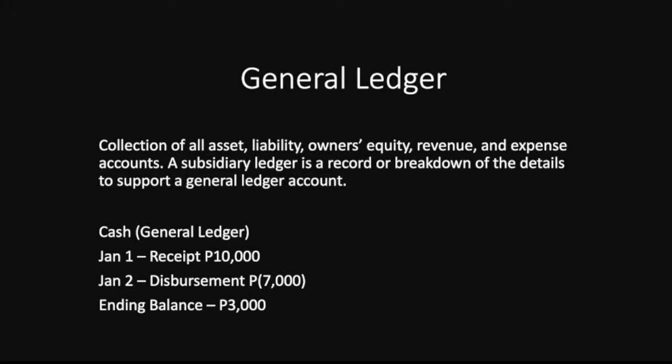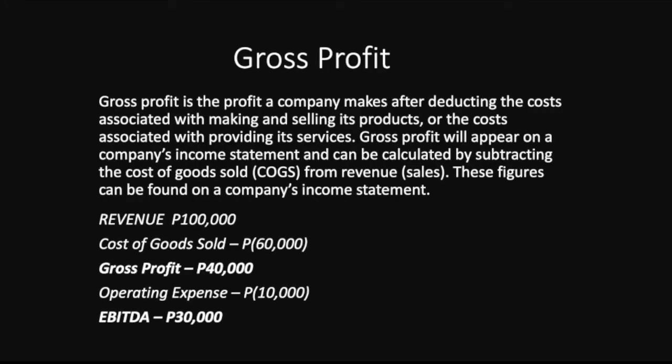The general ledger is the collection of all records or transactions of your assets, liabilities, equity, revenue, and expenses. Each account in your chart of accounts has a general ledger recording its movement — the increase or decrease of its balance. For example, if you have a cash asset, a receipt of $10,000 on January 1 and a disbursement on January 2, your general ledger shows the ending balance — that report is called the general ledger.